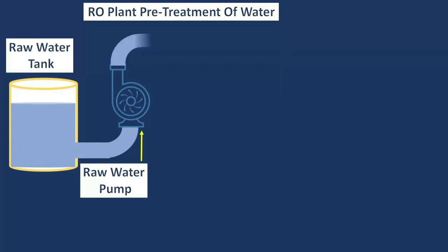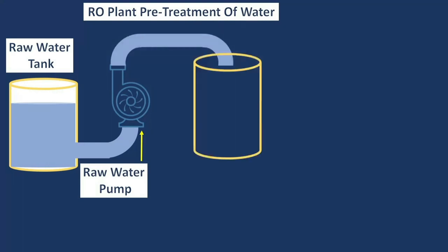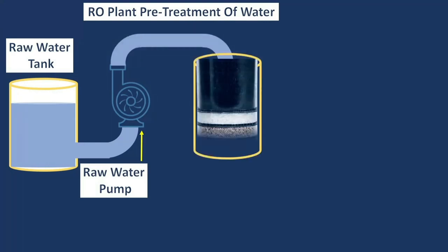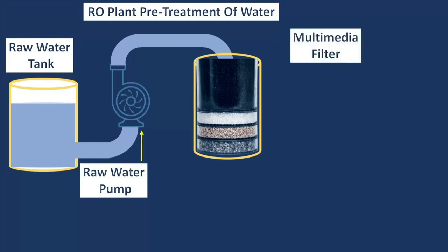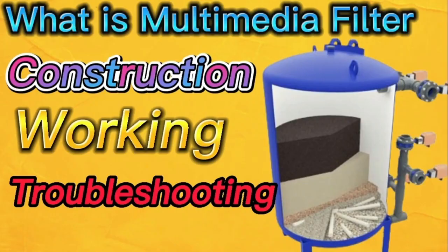Water flows to the multimedia filter from the raw water pump. In the multimedia filter, suspended solids up to 50 microns are removed from the water. More details on the multimedia filter are available via the info button or on this channel, where a dedicated detailed video has already been made.